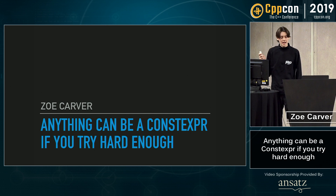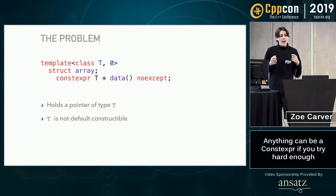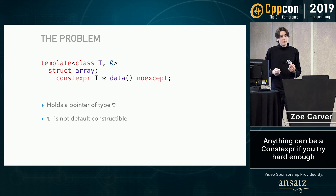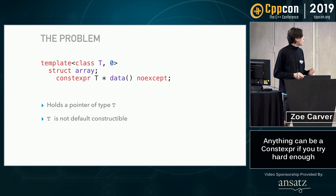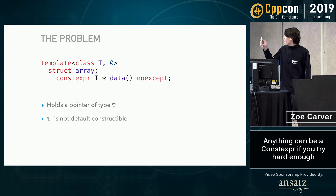Anything can be a constexpr if you try hard enough. The main problem we're going to be focusing on is this specialization of std::array, and that specialization is std::array<T, 0>. In this specialization, one element of type T is held, and it's important to remember that T is not necessarily default constructible. Here's the method we're going to be focusing on: it's data(), and it returns a pointer of type T.